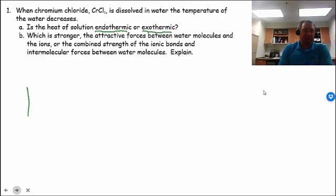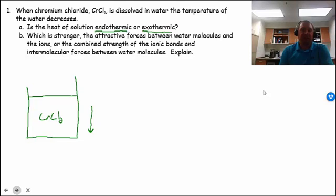So when I have a beaker of water and I dissolve chromium chloride in it, the temperature of the water goes down. What this means is it requires a net input of energy to dissolve the chromium chloride. The energy comes from the water. So energy is coming from the water in order to make this dissolving process happen.